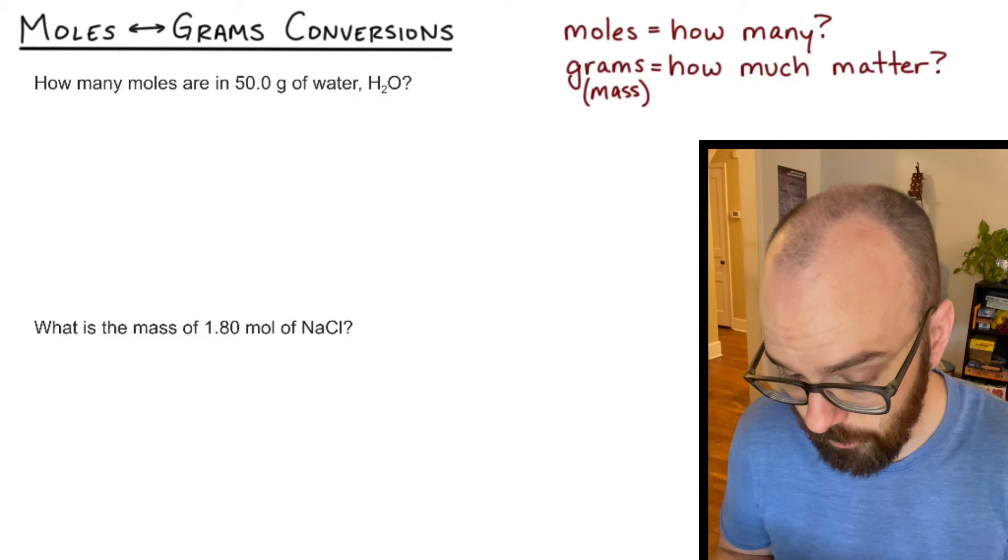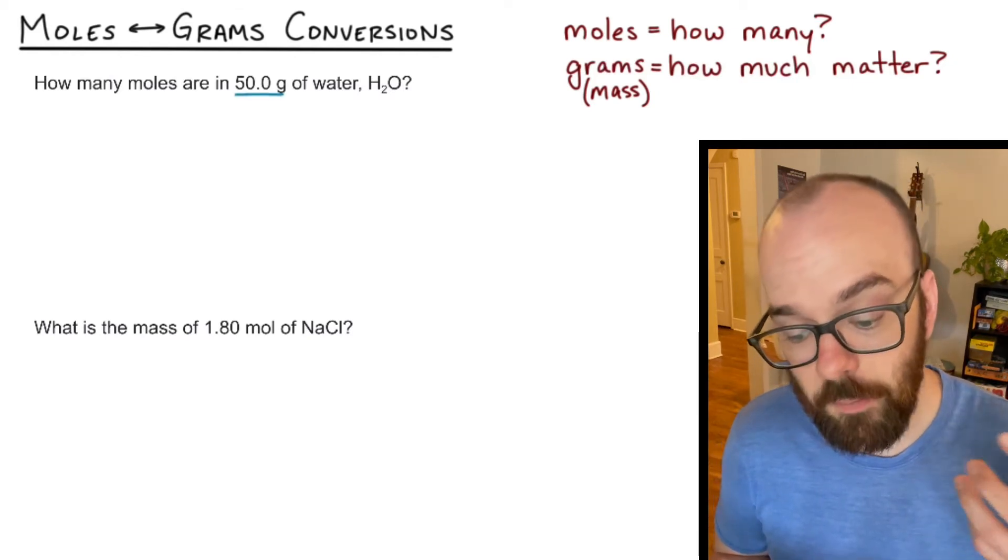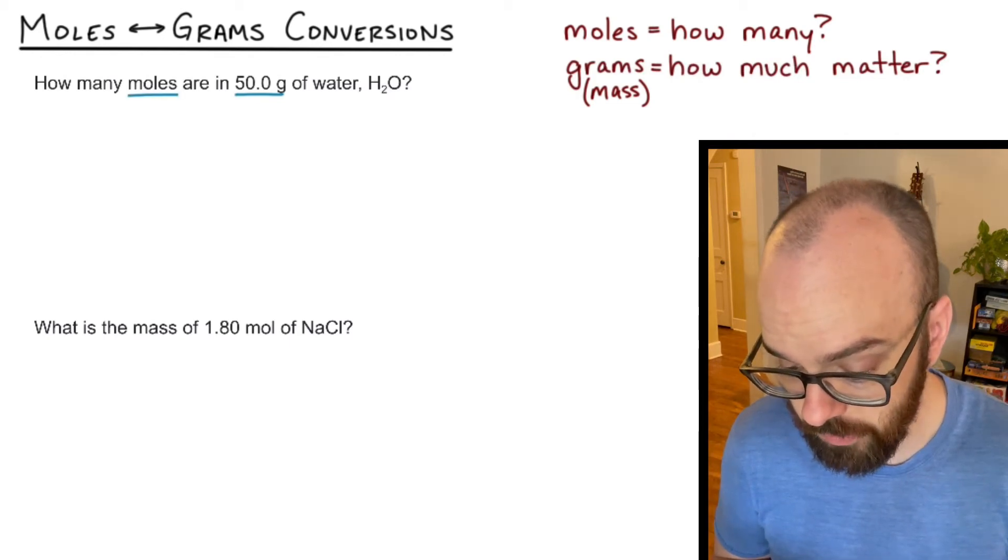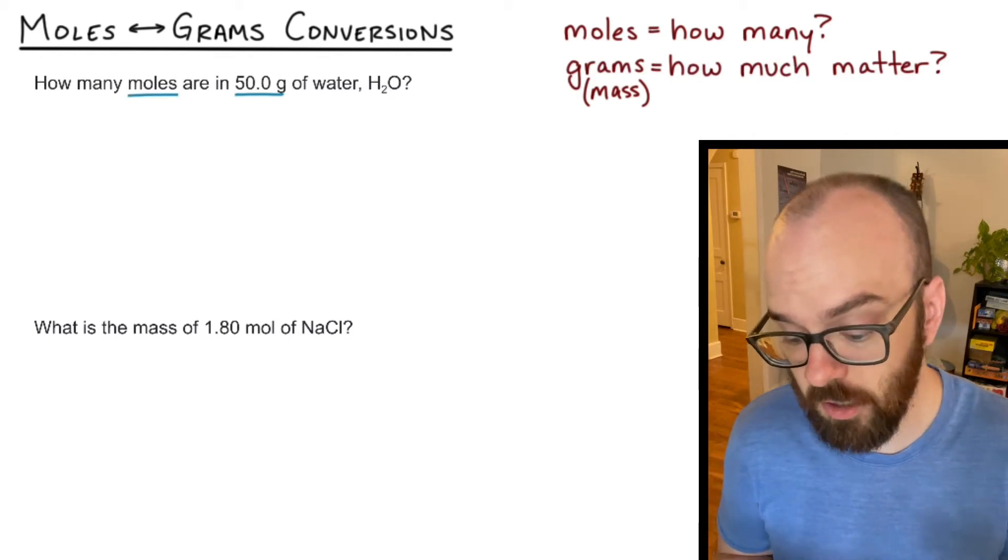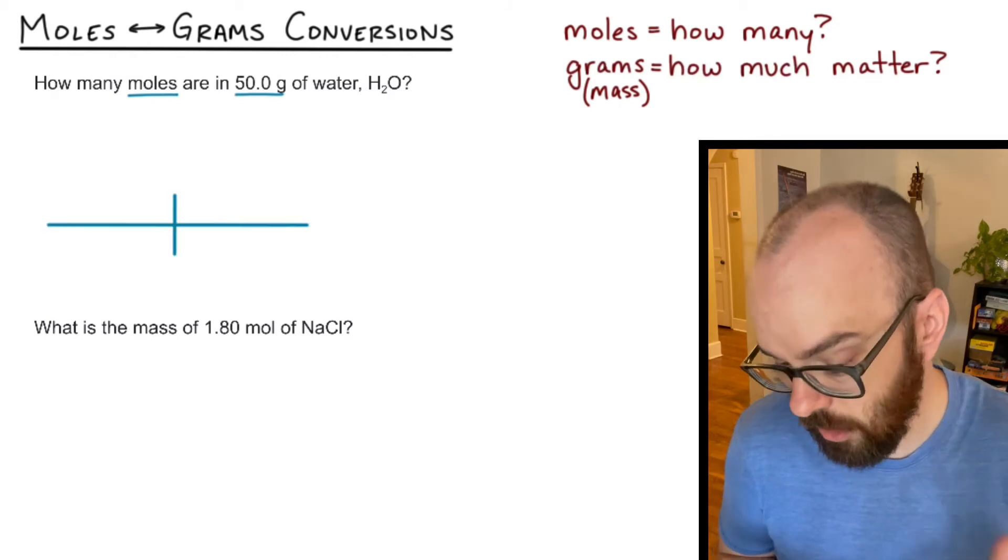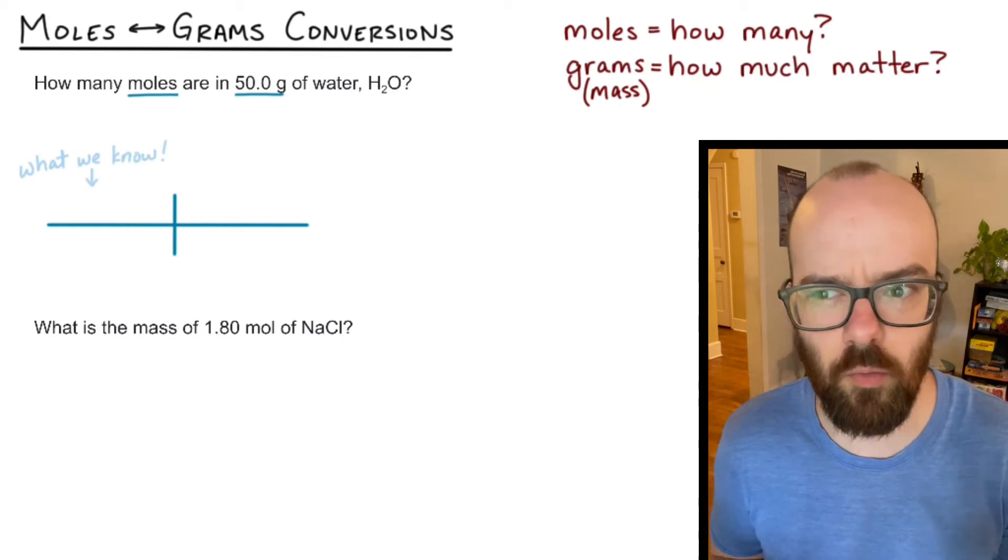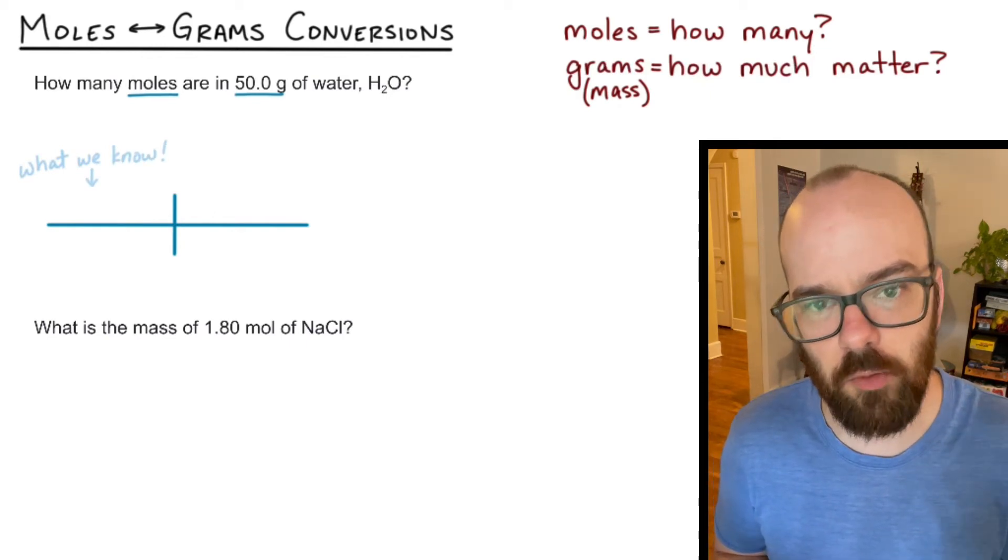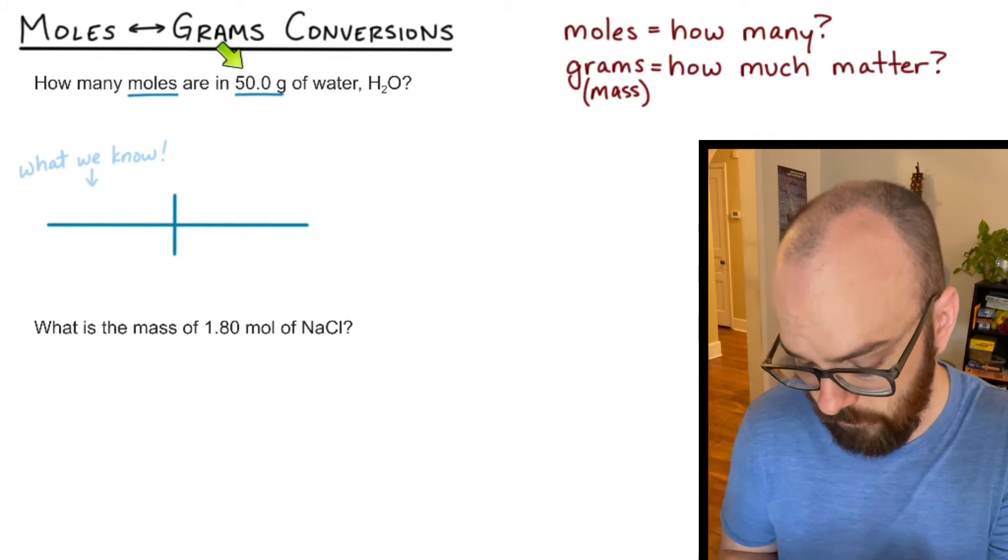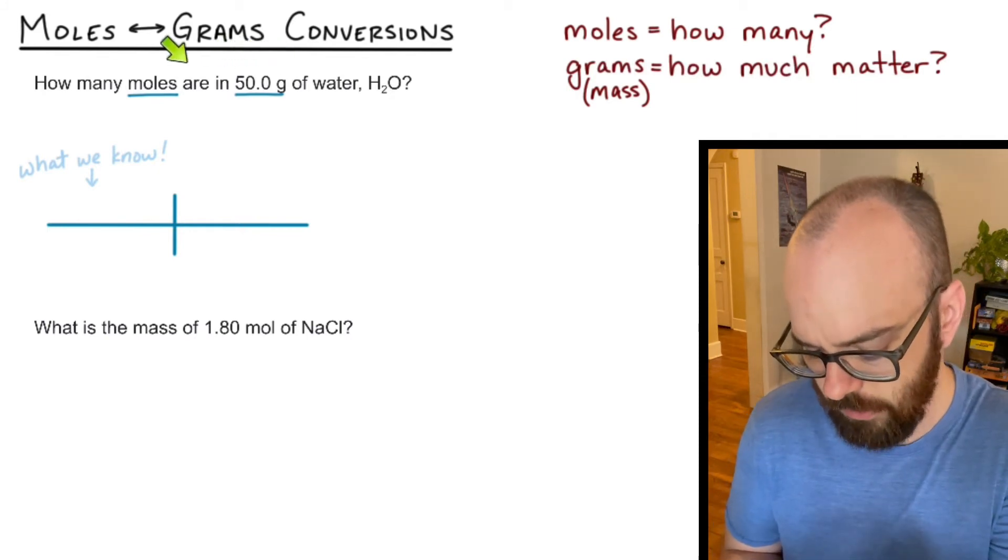Let's read our first problem. It says how many moles are in 50 grams of water, H2O. So what I'm given is the 50.0 grams, and it says how many moles. So this is going to be a grams to moles conversion. So I'm going to set up my T chart or conversion chart here. And on the first box there, I'm always going to write what we know or what information we're starting with in the problem. In this case, the only value that we know is the 50.0 grams of water, we're converting that amount into moles.